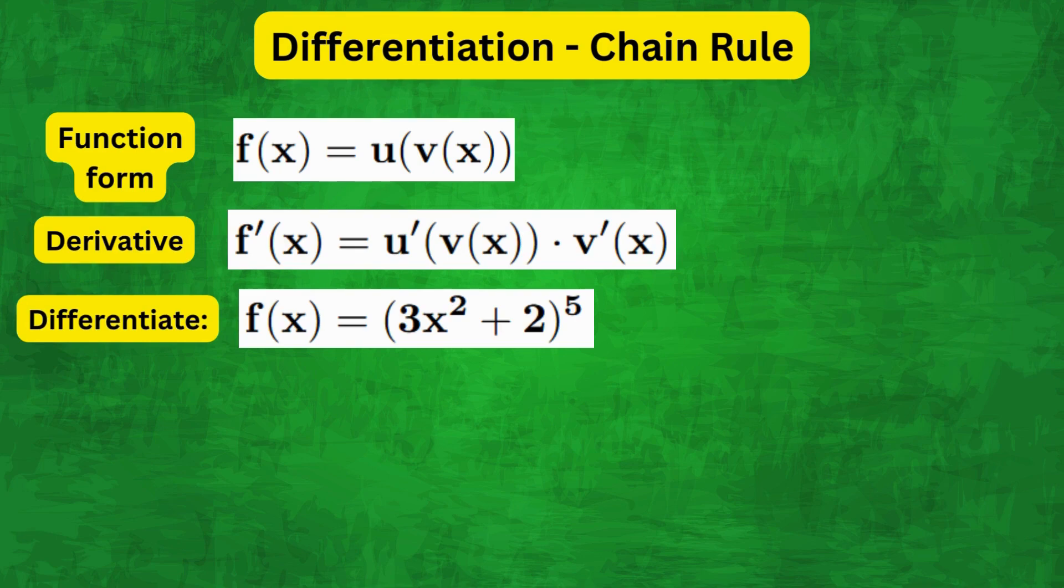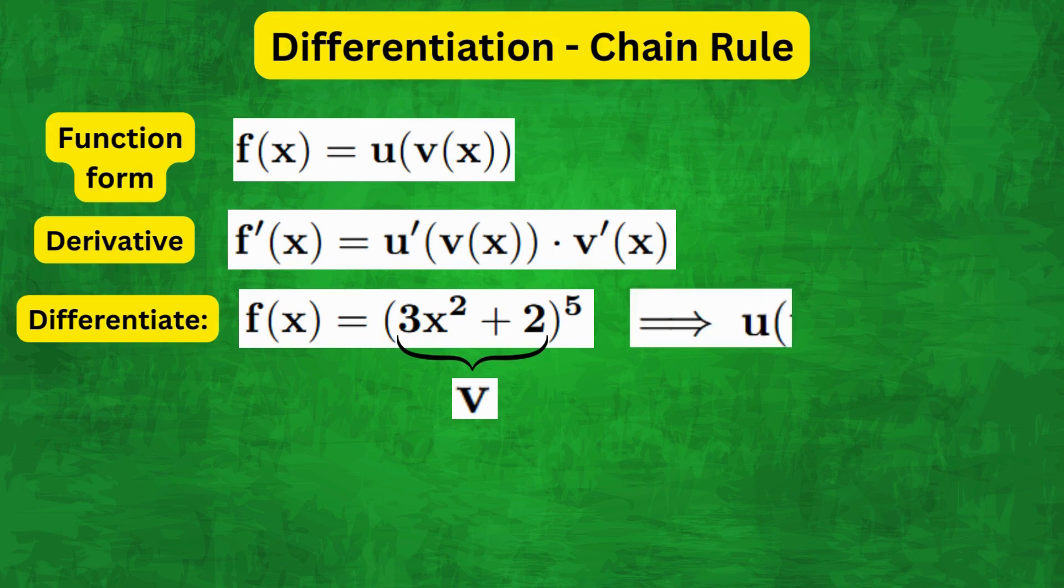Now let's denote 3x² + 2 as v. Then the outer function is u(v) equals v^5.